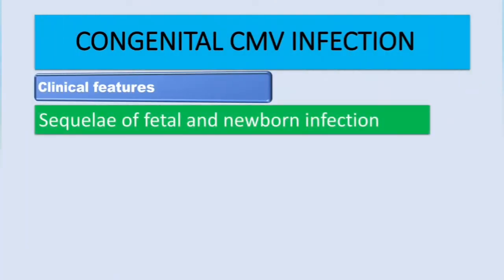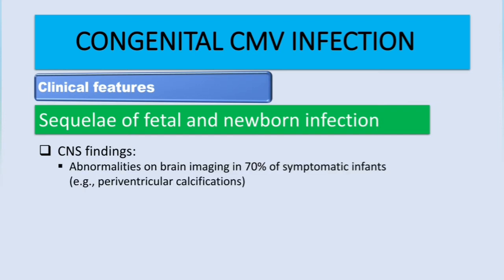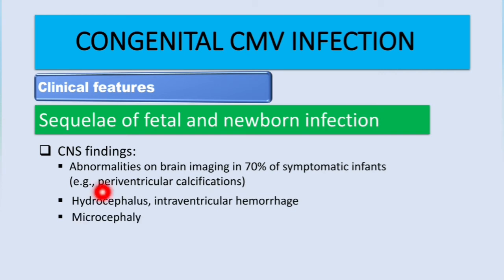Now let's talk about the sequelae or consequences of fetal and newborn infection. Central nervous system findings include abnormalities on brain imaging in about 70% of symptomatic infants, for example periventricular calcifications, hydrocephaly, and intraventricular hemorrhage.